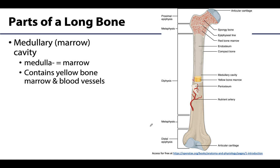The medullary or marrow cavity is found within the diaphysis and is characteristically hollow, almost cylindrical in shape. This is an important area for yellow bone marrow storage, and neurovasculature runs through the medullary cavity as well. The medullary cavity also helps reduce the weight of the bone — consider how heavy bone would be if this entire area were filled with compact bone, which would make movement more difficult and certainly more energy consuming.